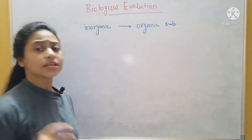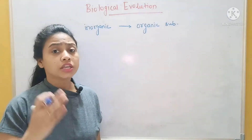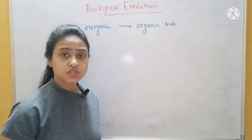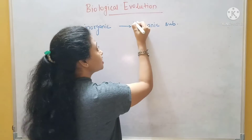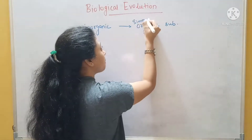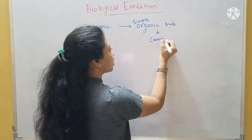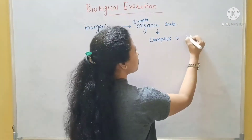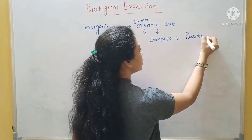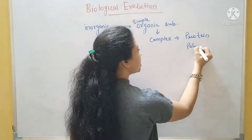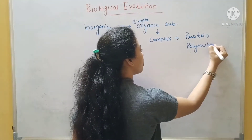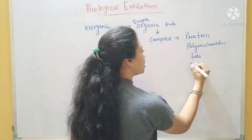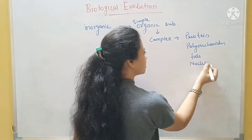It is not that directly it is converted into complex organic substances. First, it is converted into simple organic substances. Then complex organic substances formed, which became proteins, polysaccharides, fats, and nucleic acid.